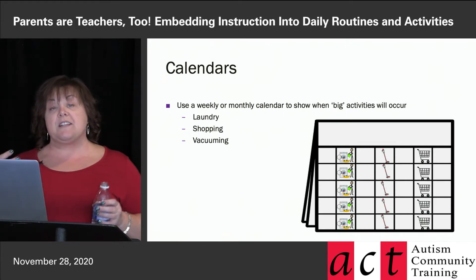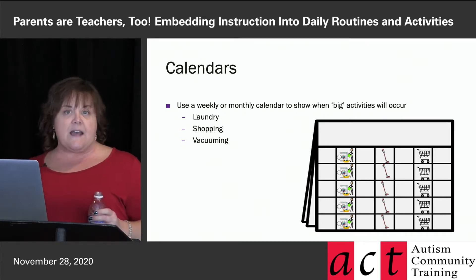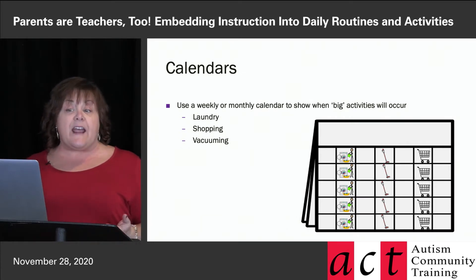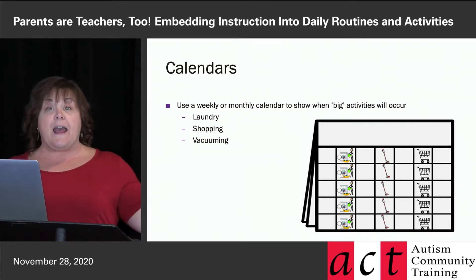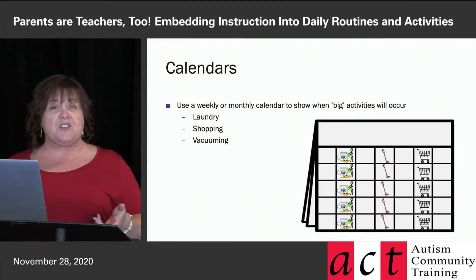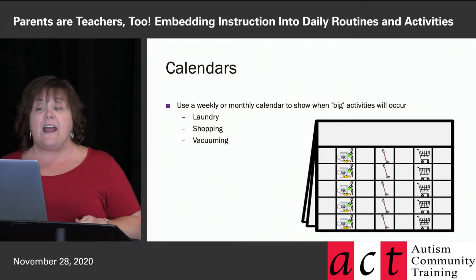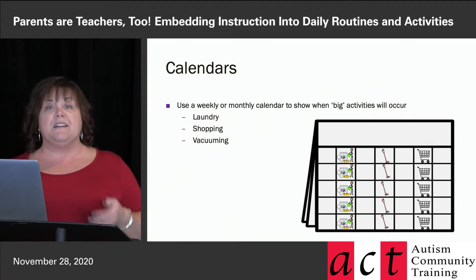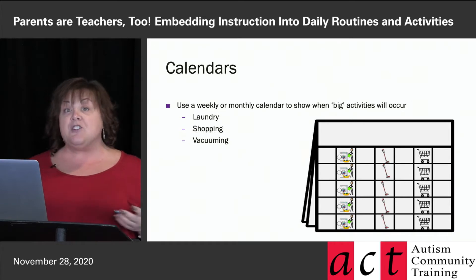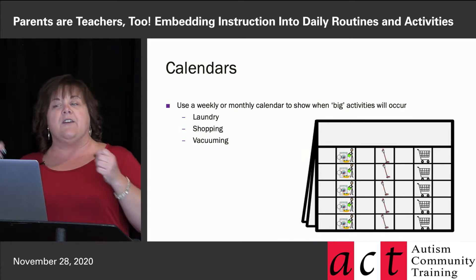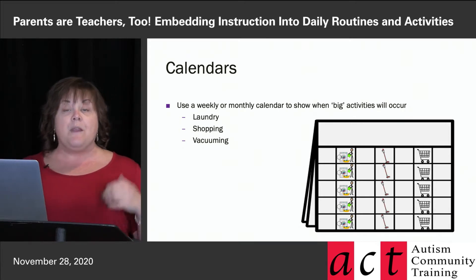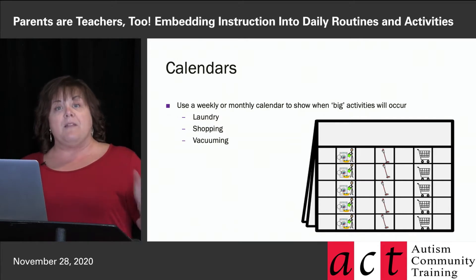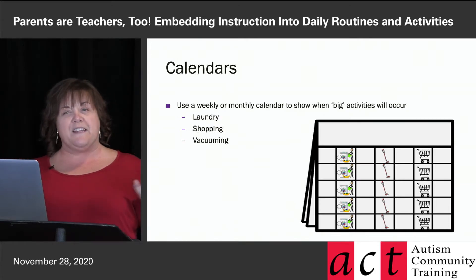You might think about calendars as a way of showing either weekly or monthly tasks and when they should occur. Think about things like laundry day, shopping day, vacuuming day. You can get a big desk pad calendar and write down the information if your child reads, or use symbols cut and pasted with your child. Sit down and plan together — when are we going to do laundry, vacuum, and so on. Your monthly calendar can show when different activities are planned.